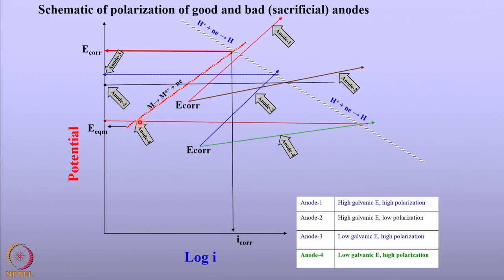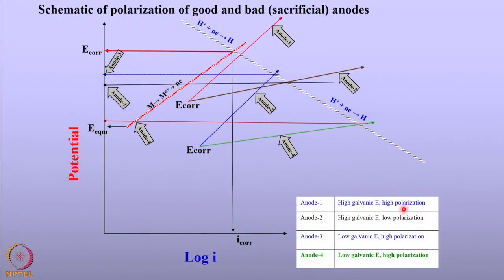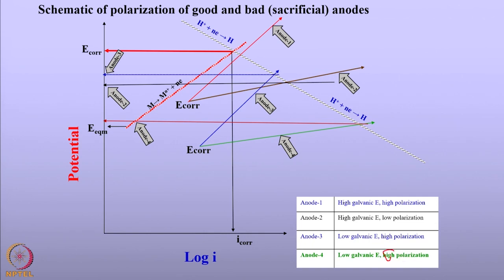In summary, we can classify sacrificial anodes based on combinations of galvanic potential and polarization: high galvanic potential with high polarization; high galvanic potential with lower polarization; low galvanic potential with high polarization; and low galvanic potential with low polarization. The efficacy of the anode depends upon both the galvanic potential and the polarization. Ideally, the anode should have low galvanic potential and low polarization.